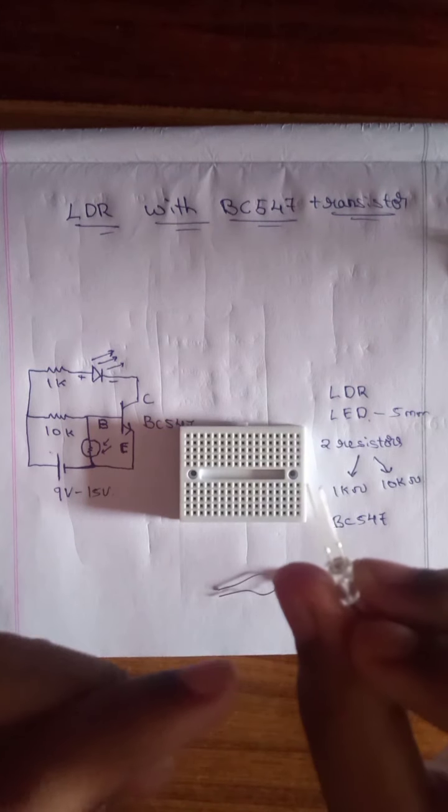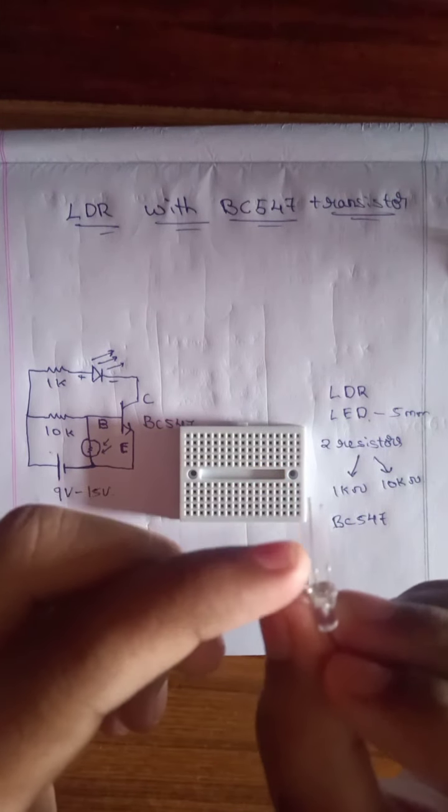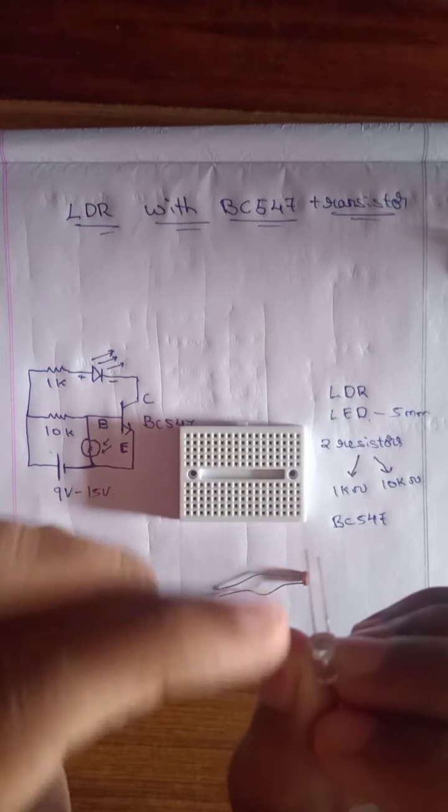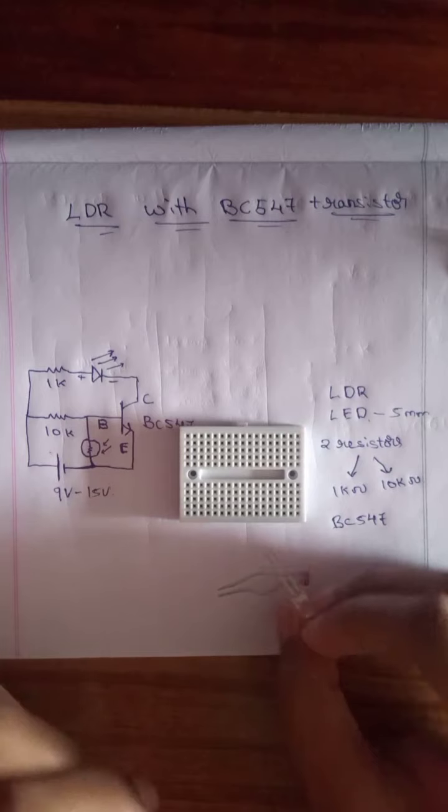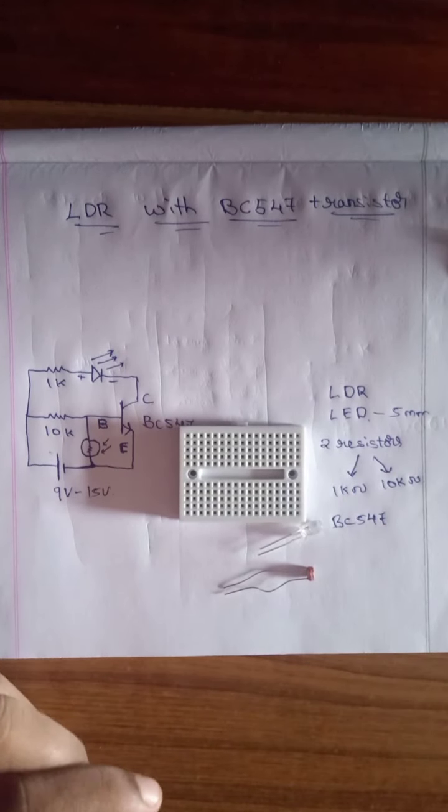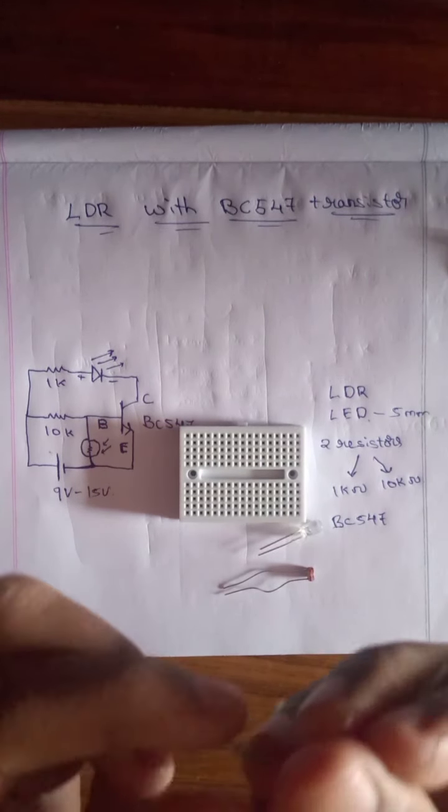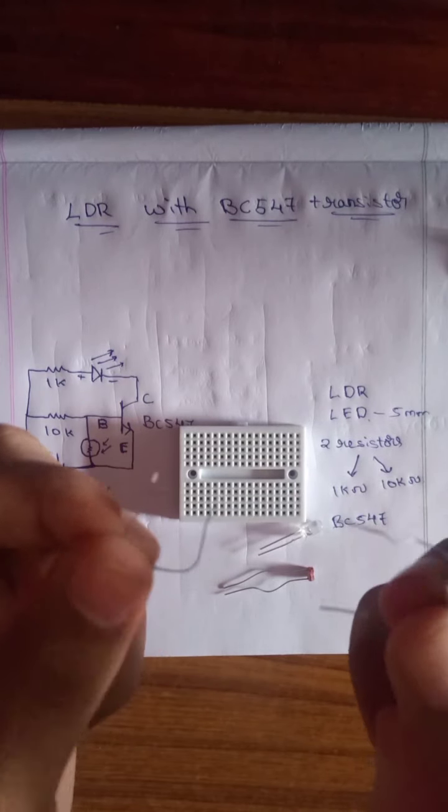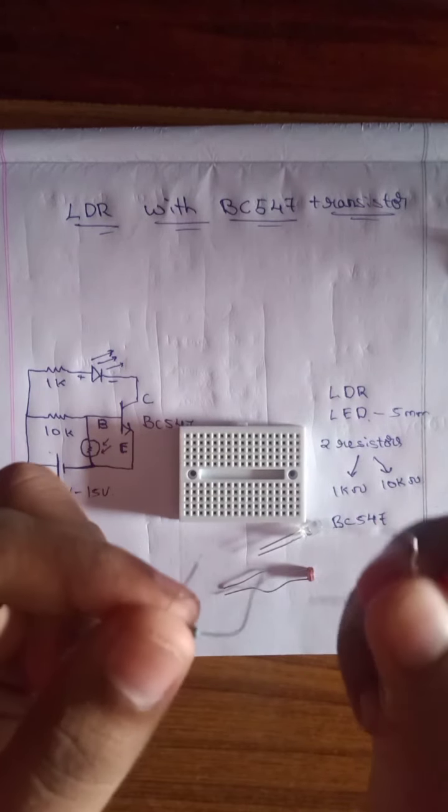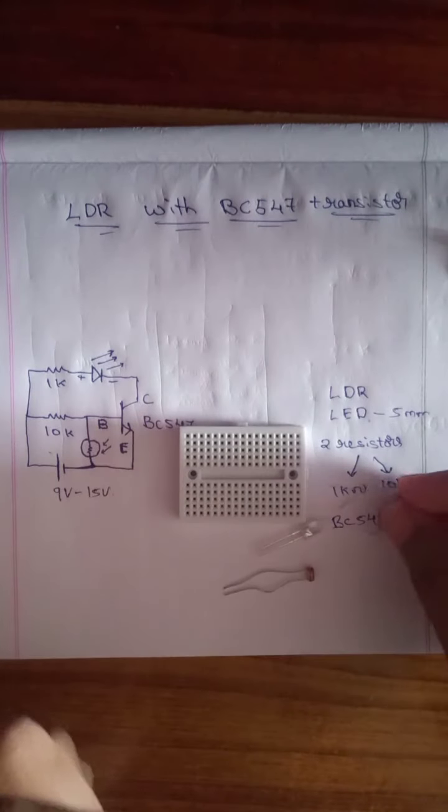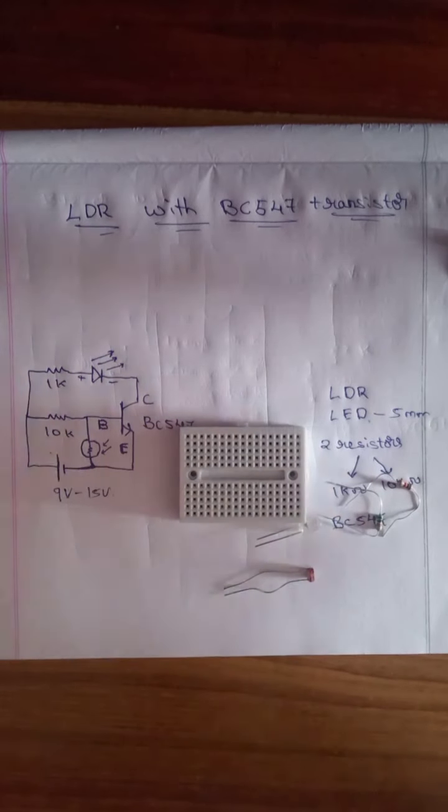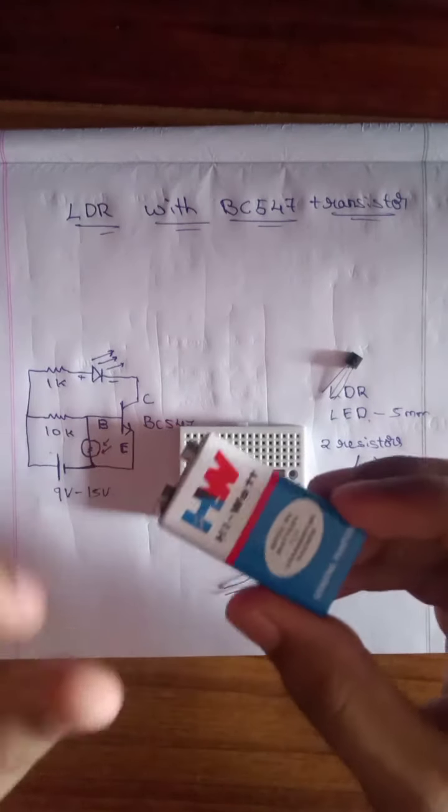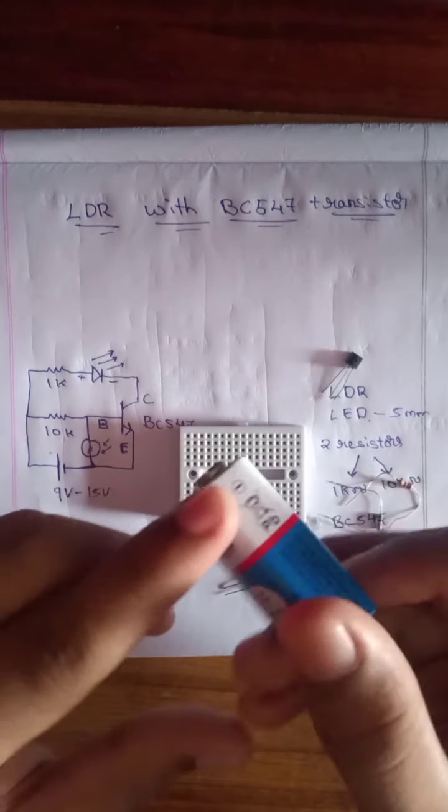LED. Coming to LED, the positive one is noted with the largest pole. This is called positive and this is negative. Similarly, for resistors, there is no polarity. You can use positive in any direction, positive or negative in any direction. These are all required components with a 9V battery.